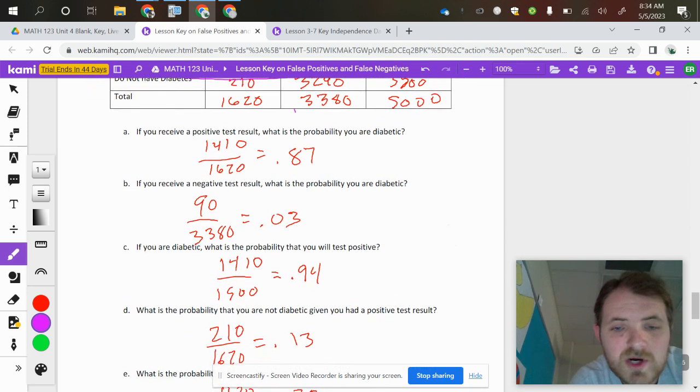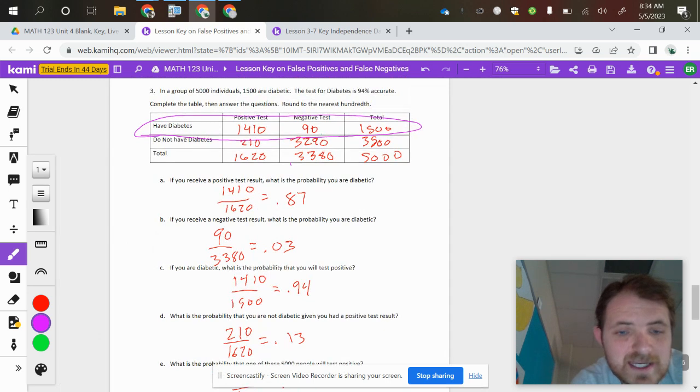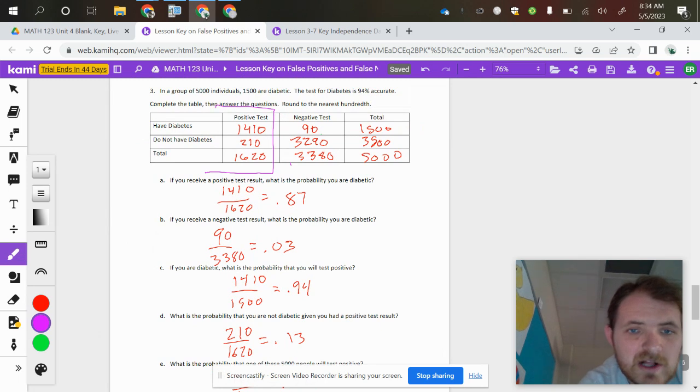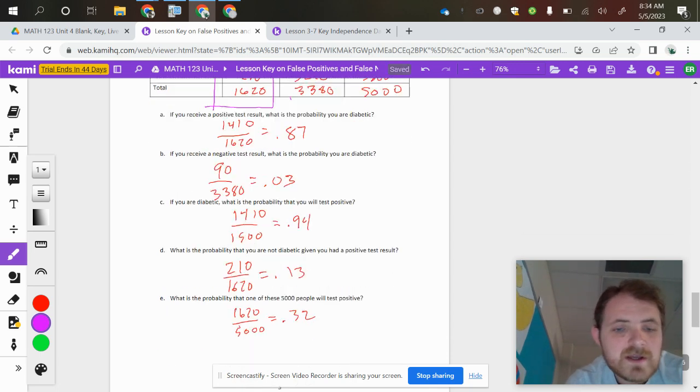And then it says, what's the probability that you are not diabetic, given that you had a positive test result. So again, if you have a positive test result, you're looking at this column here, the people that are not diabetic are 210 out of that 1,620, which gets you a 13%. And then lastly, to round it out...